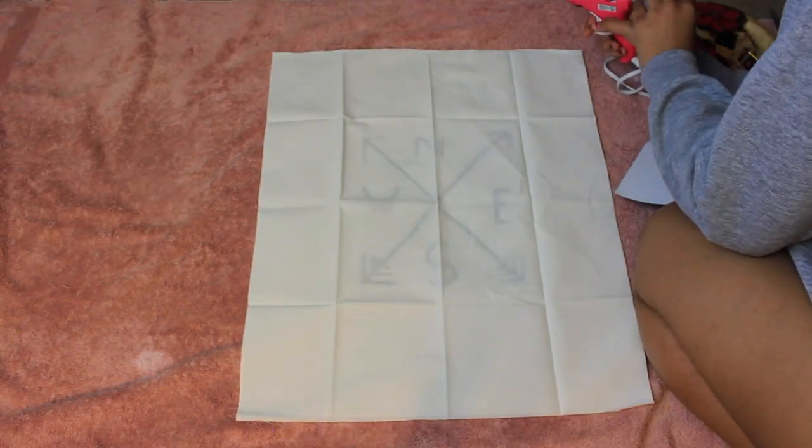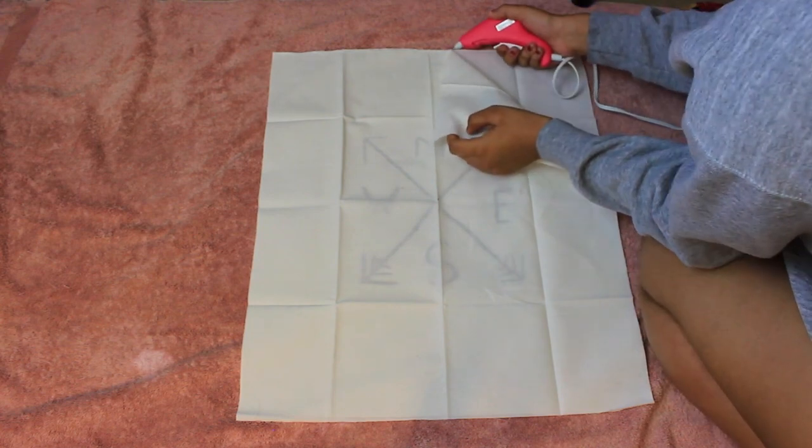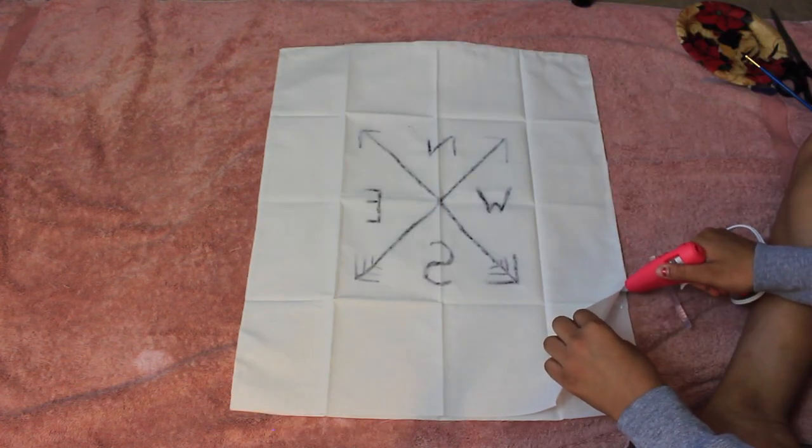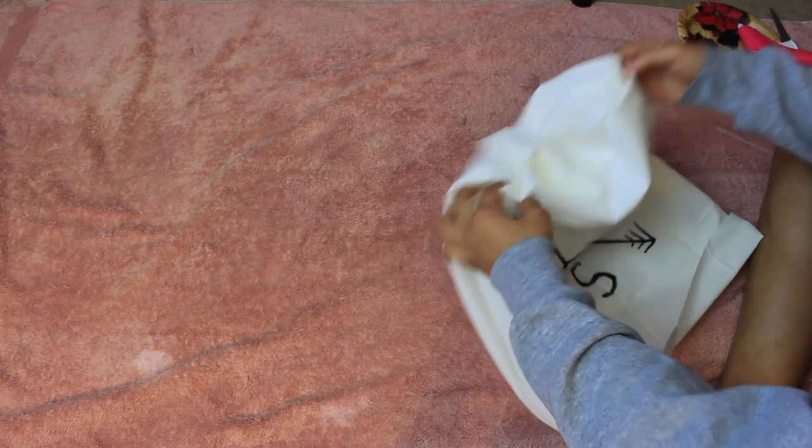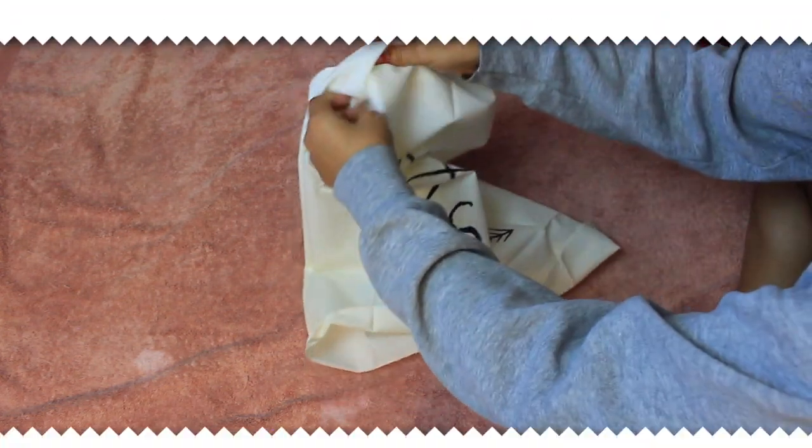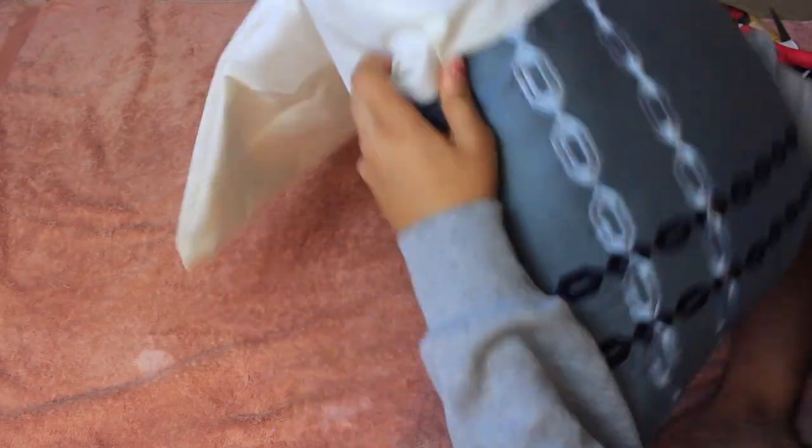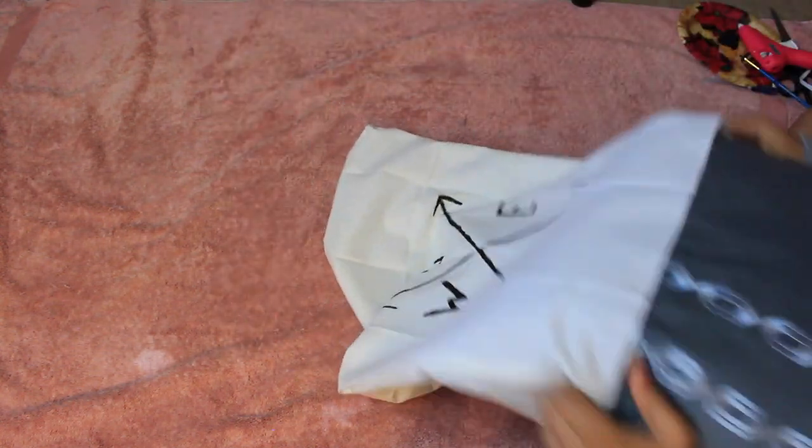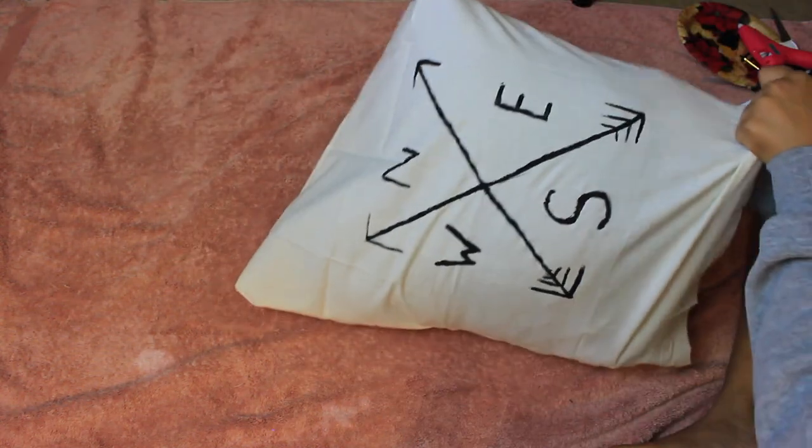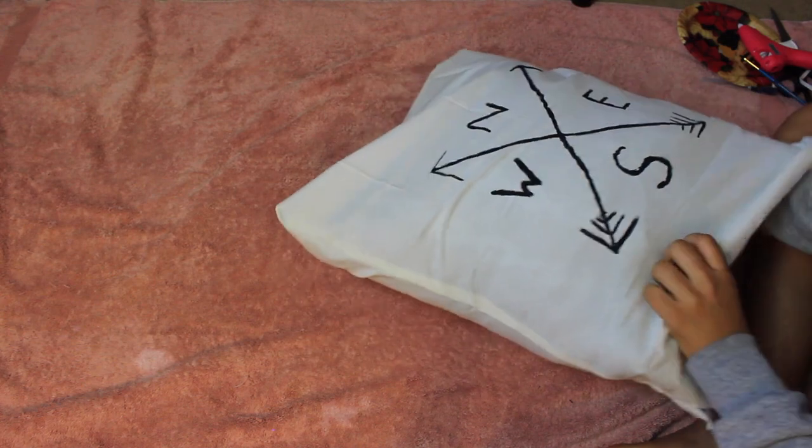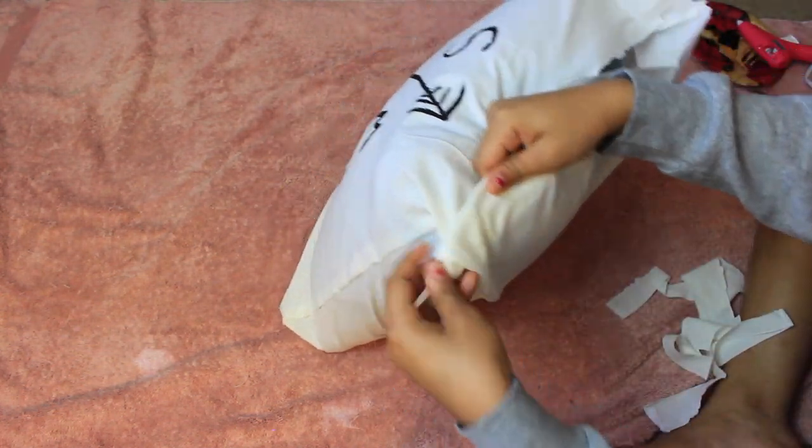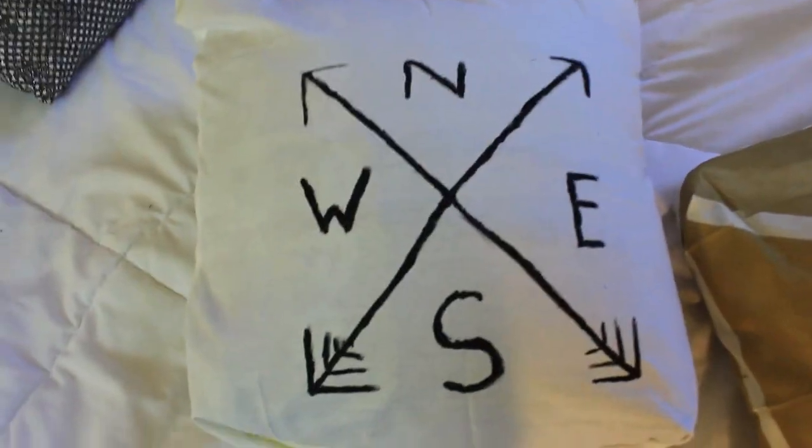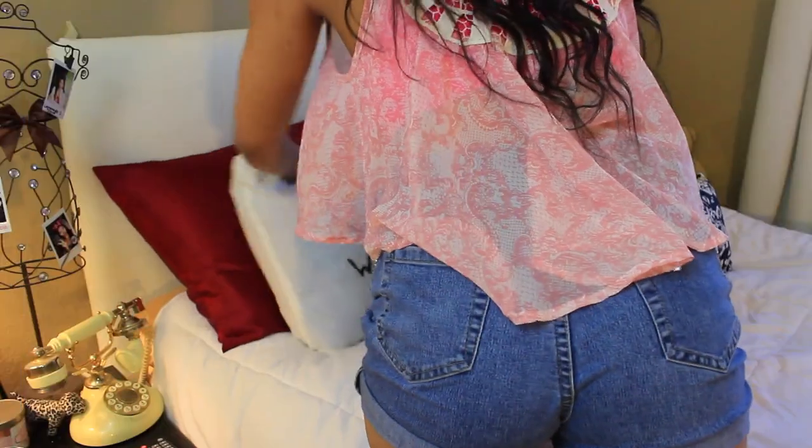Now you will hot glue three of the four sides so then you can flip your pillowcase inside out. Now I'm just stuffing my pillow into my pillowcase. Now I'm just hot gluing the open end and now you're done with this DIY. I made another pillow using the same technique from the first DIY.